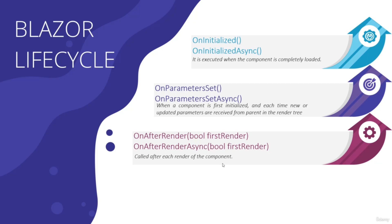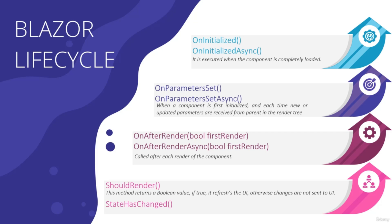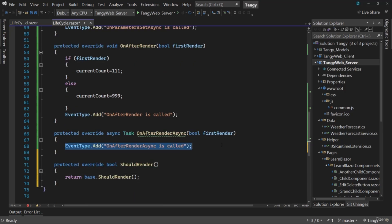With that we've seen OnAfterRender and OnAfterRenderAsync. The next lifecycle methods are ShouldRender and StateHasChanged. ShouldRender returns a Boolean — if true, the UI is refreshed; otherwise changes are not sent to the UI. ShouldRender always performs the initial rendering regardless of its return value. Inside the lifecycle component, let's add protected override ShouldRender with logging and return true to ensure rendering proceeds.